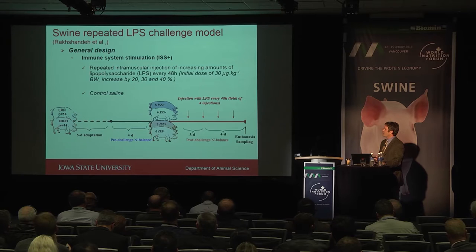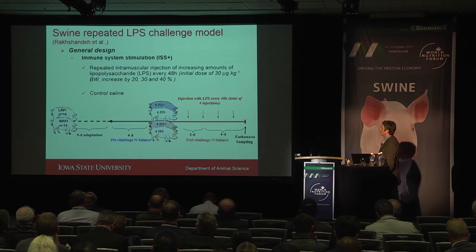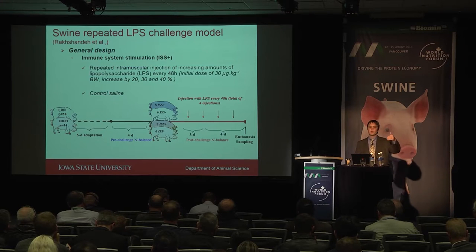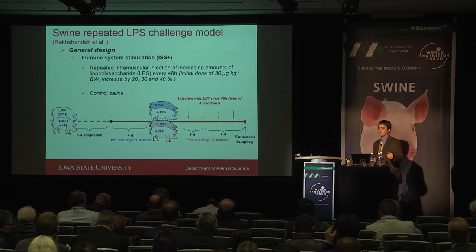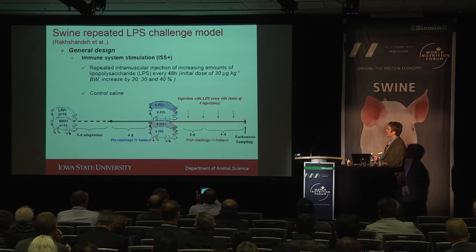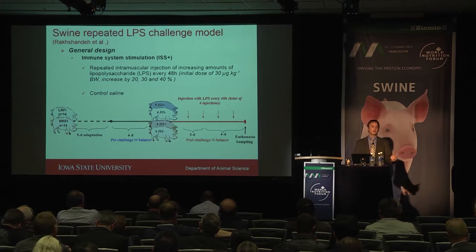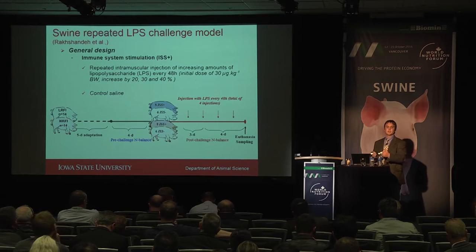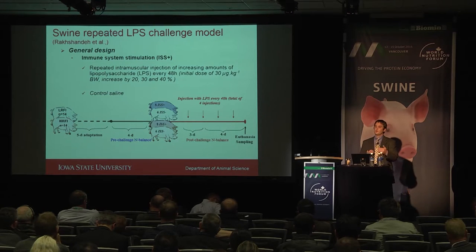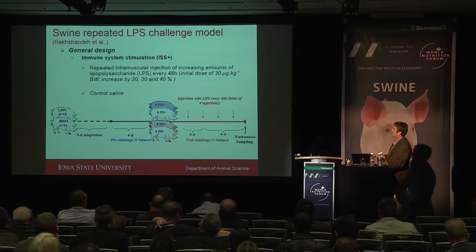In our own work in pigs, we used four to five doses of endotoxin, stepped up 20-30-40%, and looked at the impact on digestibility — both total tract and apparent ileal digestibility (AID) — and sampled pigs for other outcomes. We compared immune-stimulated pigs versus saline-challenged controls, and did this in the context of pigs selected for residual feed intake (RFI): low RFI (high feed efficiency) and high RFI (low feed efficiency).